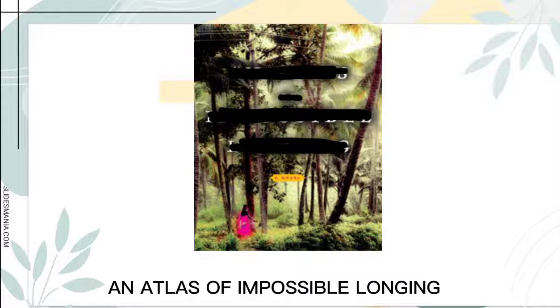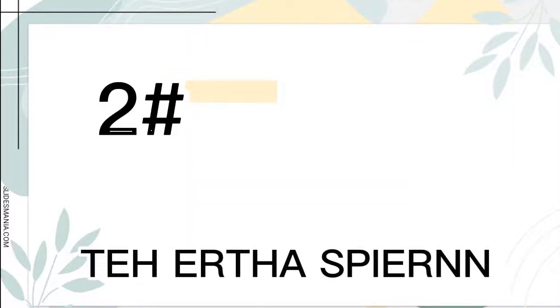Let's now reveal the answer — it is An Atlas of Impossible Longing. This activity has a twist: as you can see, there is a picture of the cover of that book. I'll ask anyone who can answer what the book is about according to its cover and its title. There's no wrong answer because it is your own understanding of the book. You can place your answers in the comment box below or in our GC. I have prepared three jumbled words and the process is the same as the first one — just pause the video and answer it, then send it to our GC or the comment box below.